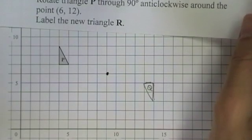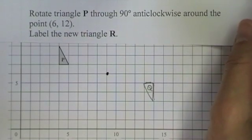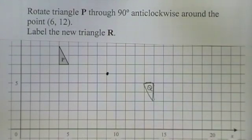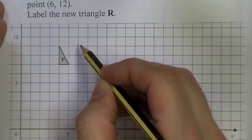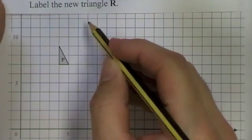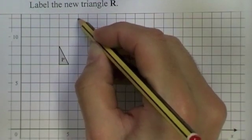The next question asks me to rotate triangle P through 90 degrees anticlockwise around the point 6,12. So find 6,12 and that's up here, so this is in the way. 6,12 is there.